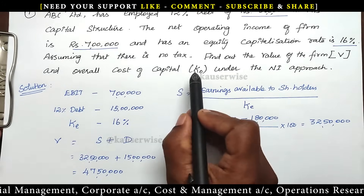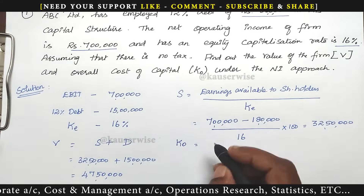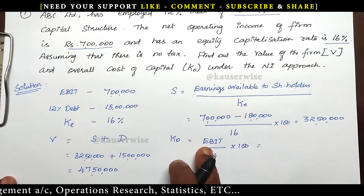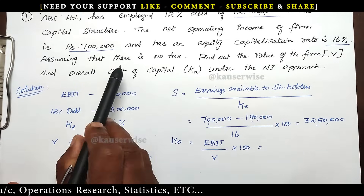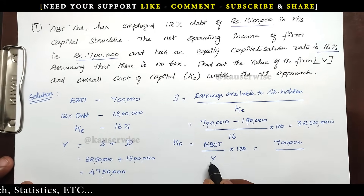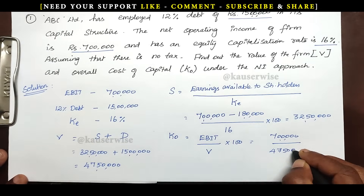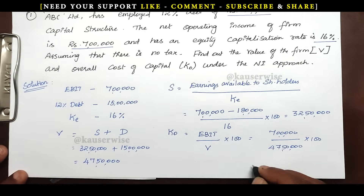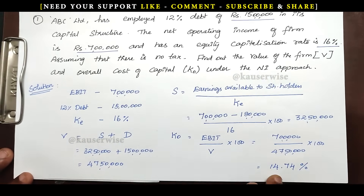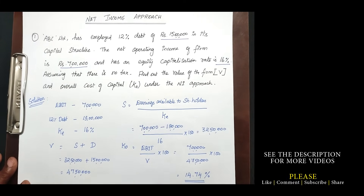Next we need to find the overall cost of capital, KO. The formula is: KO = EBIT / V × 100. EBIT is ₹7 lakhs and the market value of the firm is ₹47,50,000. So KO = 7,00,000 / 47,50,000 × 100 = 14.74%. This is the overall cost of capital of the firm, and ₹47,50,000 is the value of the firm according to the net income approach.